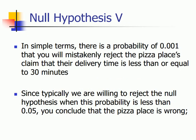In simple terms, there is a probability of 0.001 that you will mistakenly reject the pizza place's claim that their delivery time is less than or equal to 30 minutes. Since typically we are willing to reject the null hypothesis when this probability is less than 0.05, you conclude that the pizza place is actually wrong.